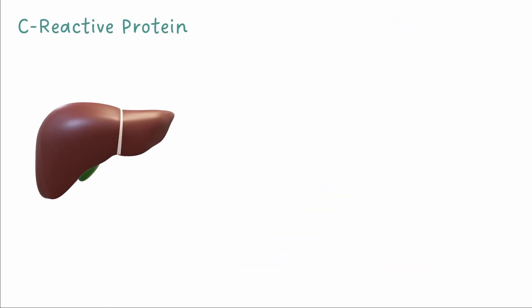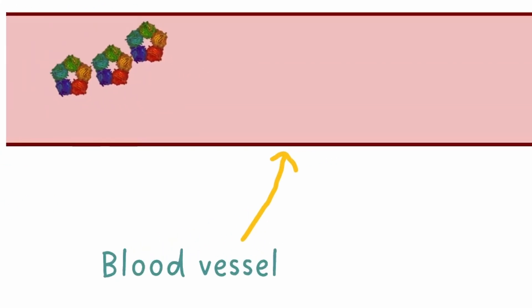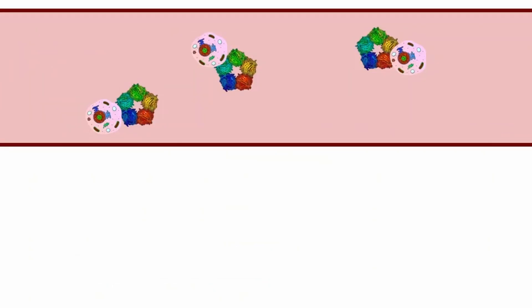From the liver, it travels in the bloodstream where it searches for dead or dying cells. From here it then activates the complement system which is part of our immune system which will help clean up these dead cells.